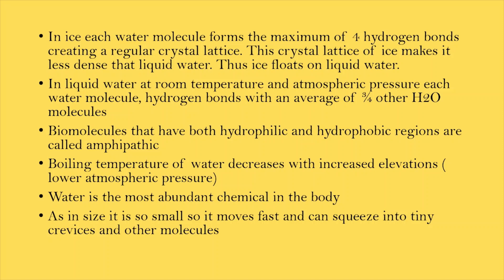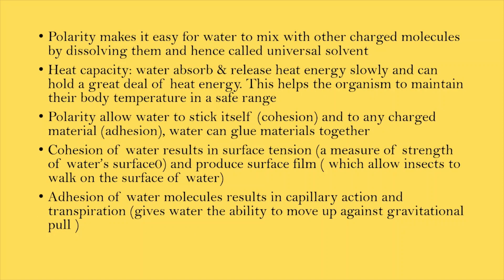Water is the most abundant chemical in the body — 75% of our body. In terms of size, it is so small it moves fast and can squeeze into tiny crevices and other molecules. Its polarity makes it easy for water to mix with other charged molecules by dissolving them, and hence it is called a universal solvent.